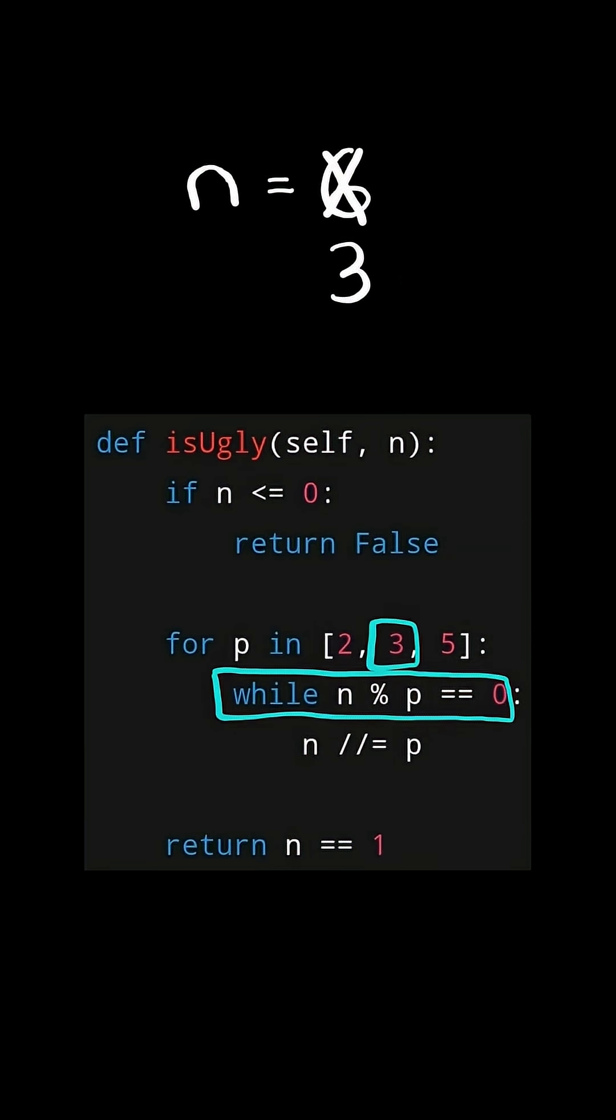Now we check, is n divisible by the prime factor 3? In this case, it is. So we divide it by the prime factor 3 and this results in 1. And we keep checking, is n divisible by the prime factor 3? In this case, it's not. So we continue to the next prime factor.